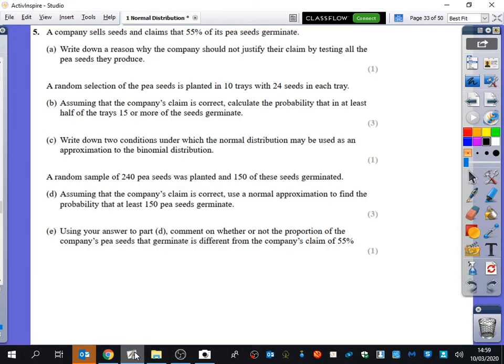Okay, so this question is one of the new spec ones, so it's a little bit tricky. We're talking about here, it says a company sells seeds and claims that 55% of its pea seeds germinate. So literally plants that are going to grow into pea plants. Write down a reason why the company should not justify their claim by testing all the pea seeds that they produce.